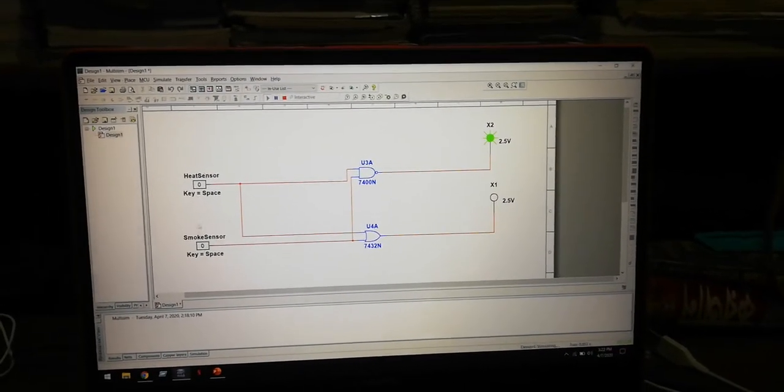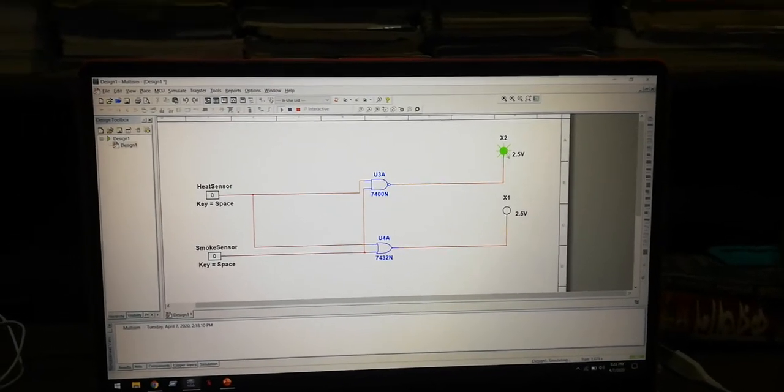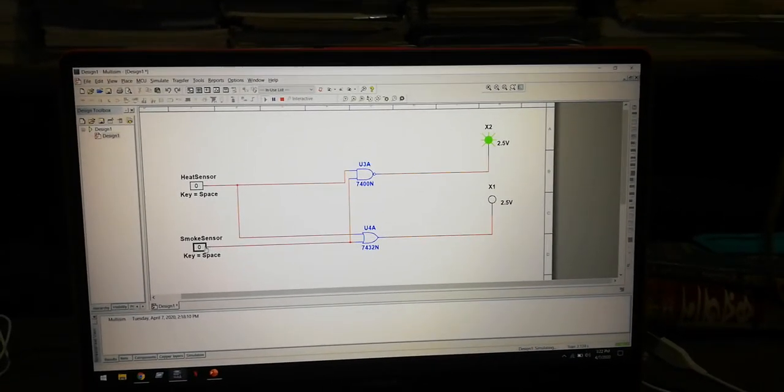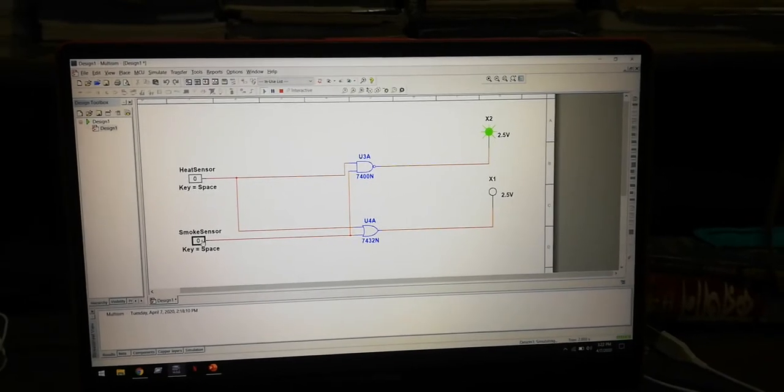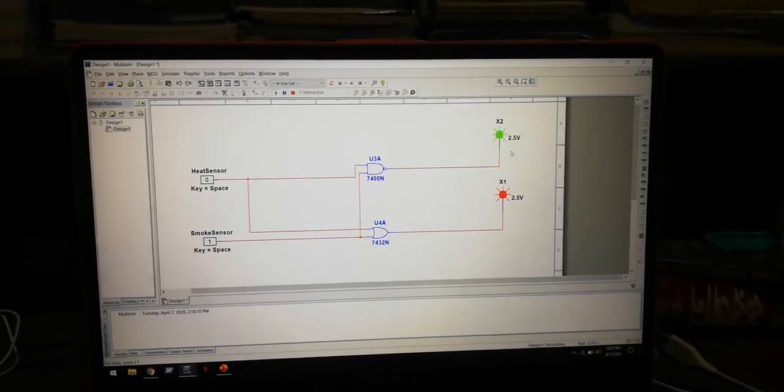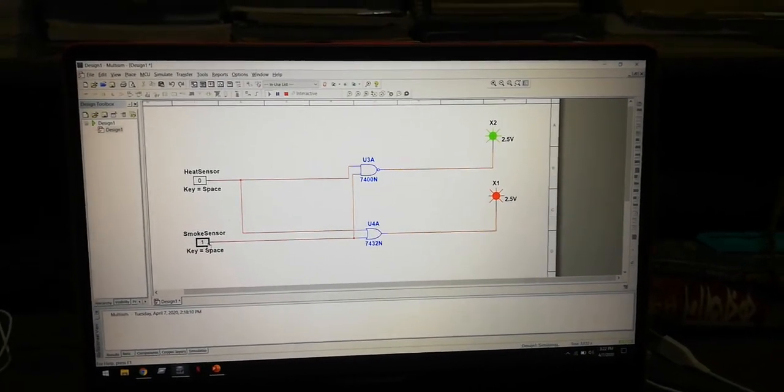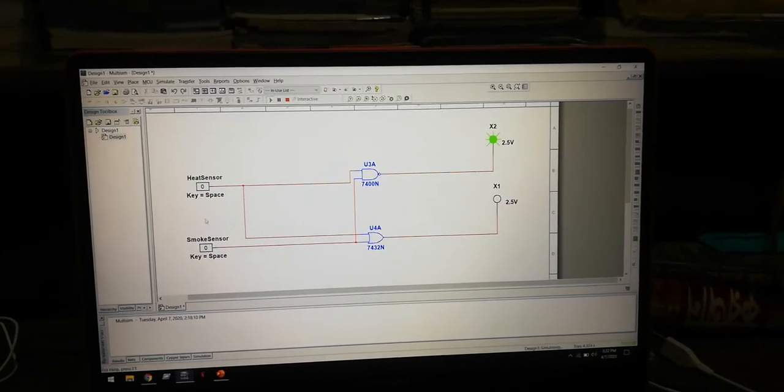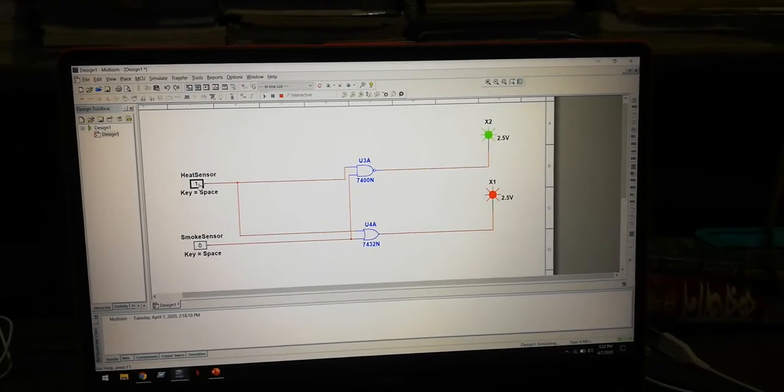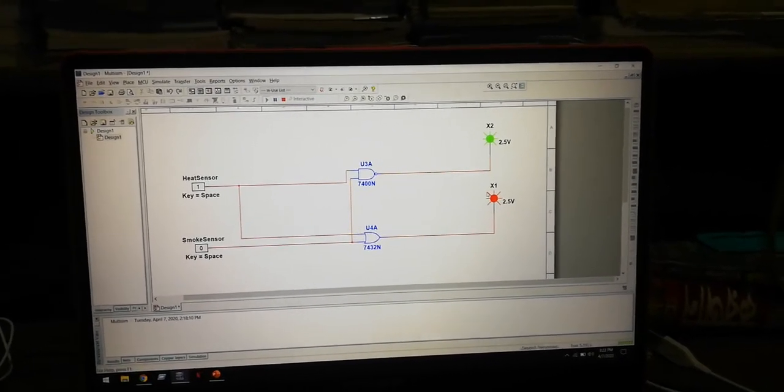When the heat sensor and smoke sensor are zero, then the green light is on. And I change the smoke sensor to one, then both lights are on. And again I use the heat sensor as one, then again both lights are on.